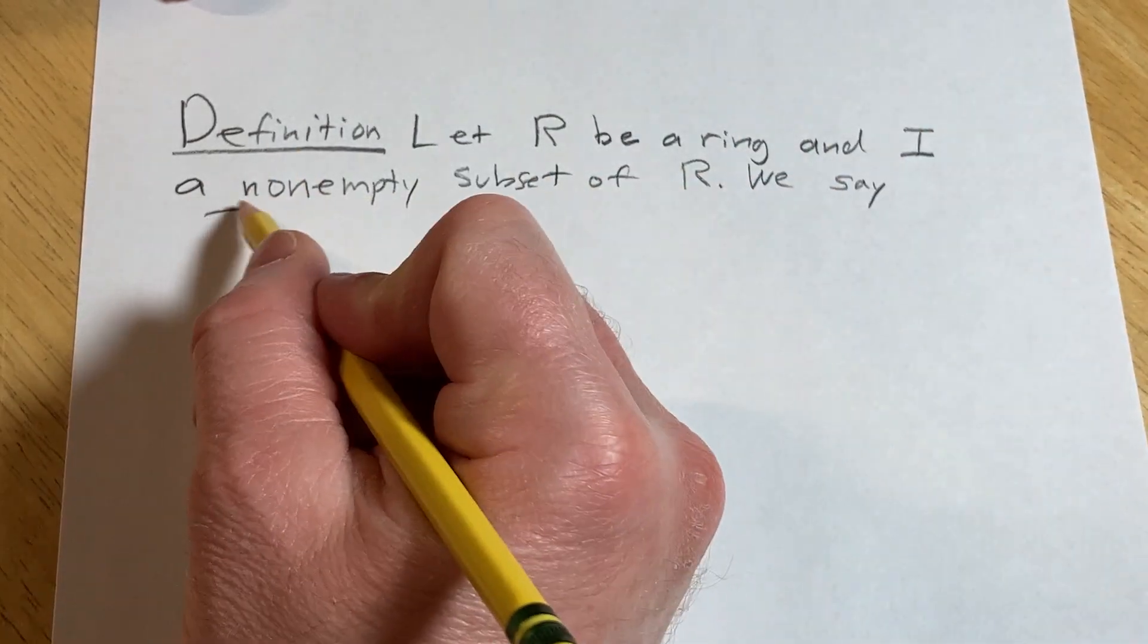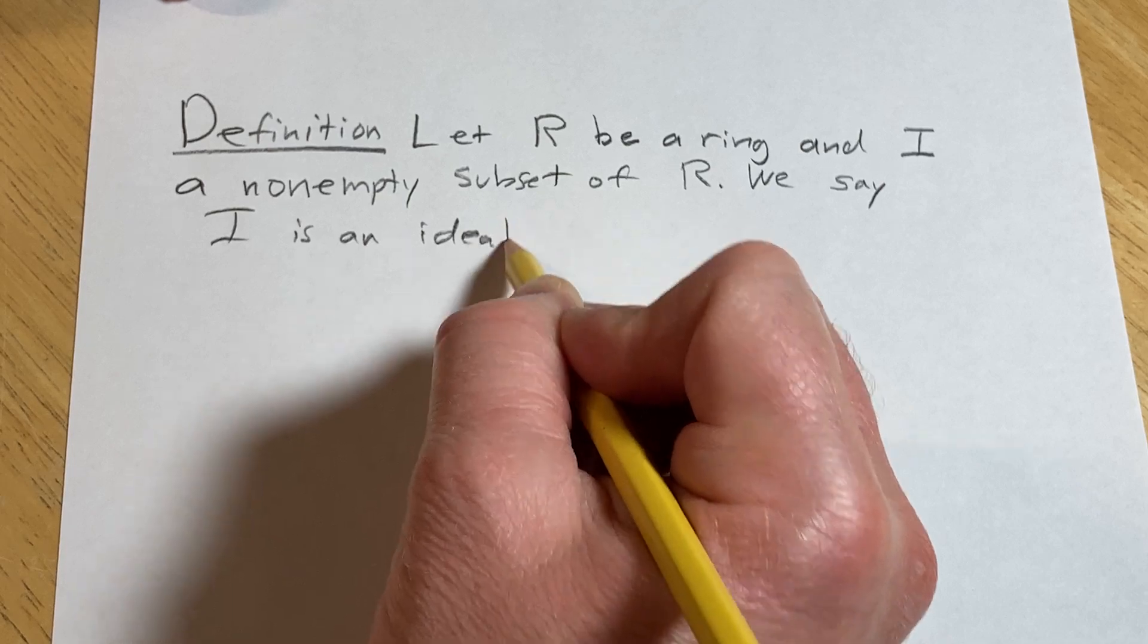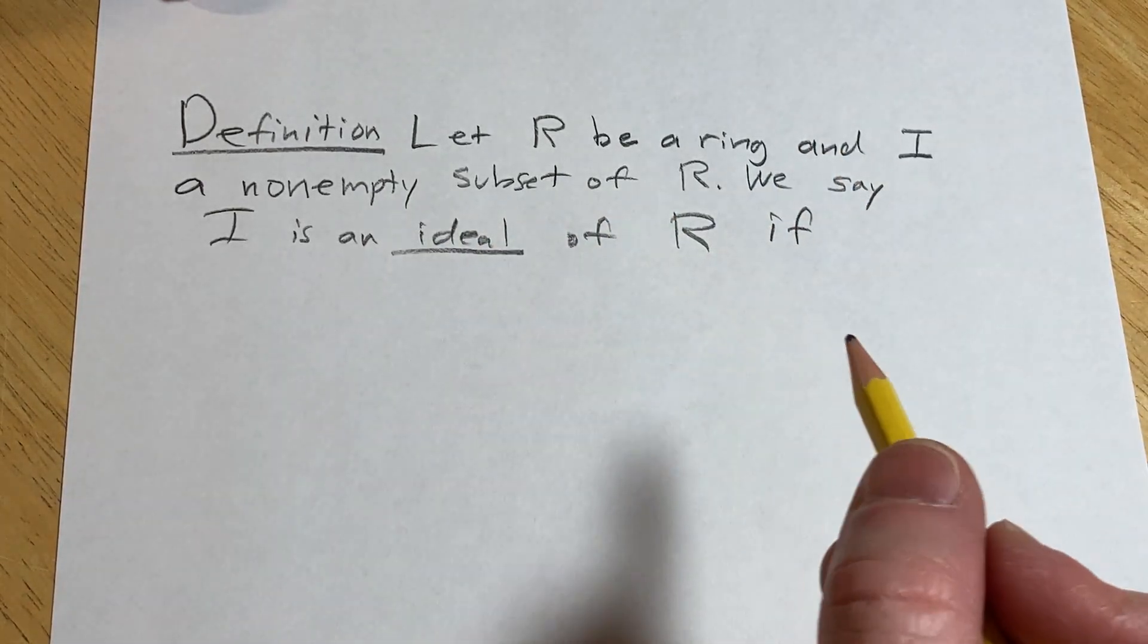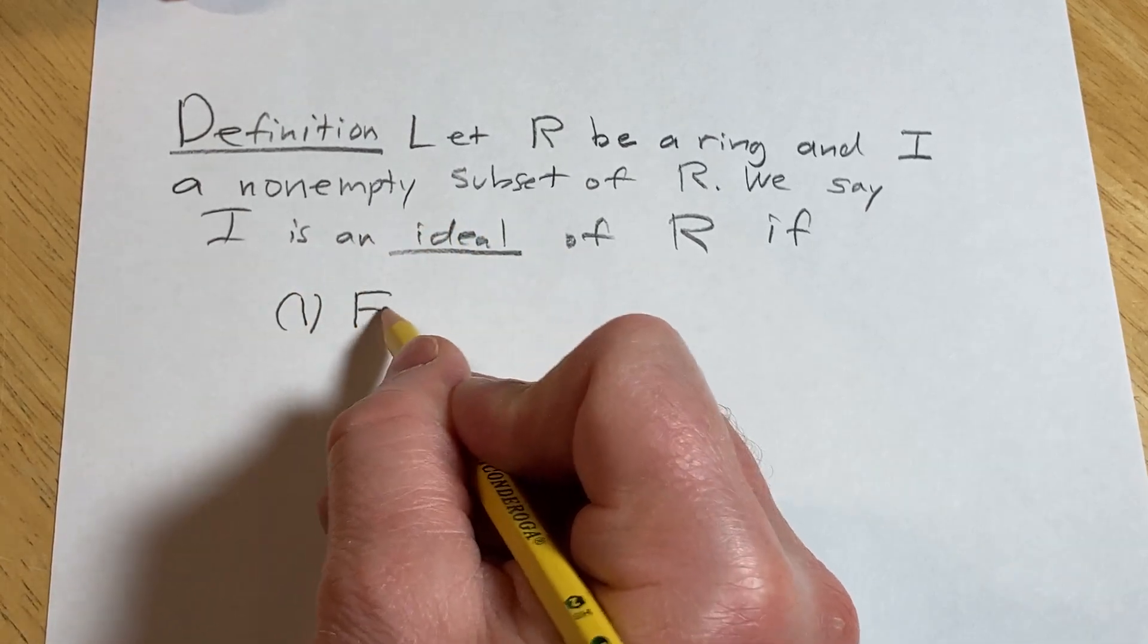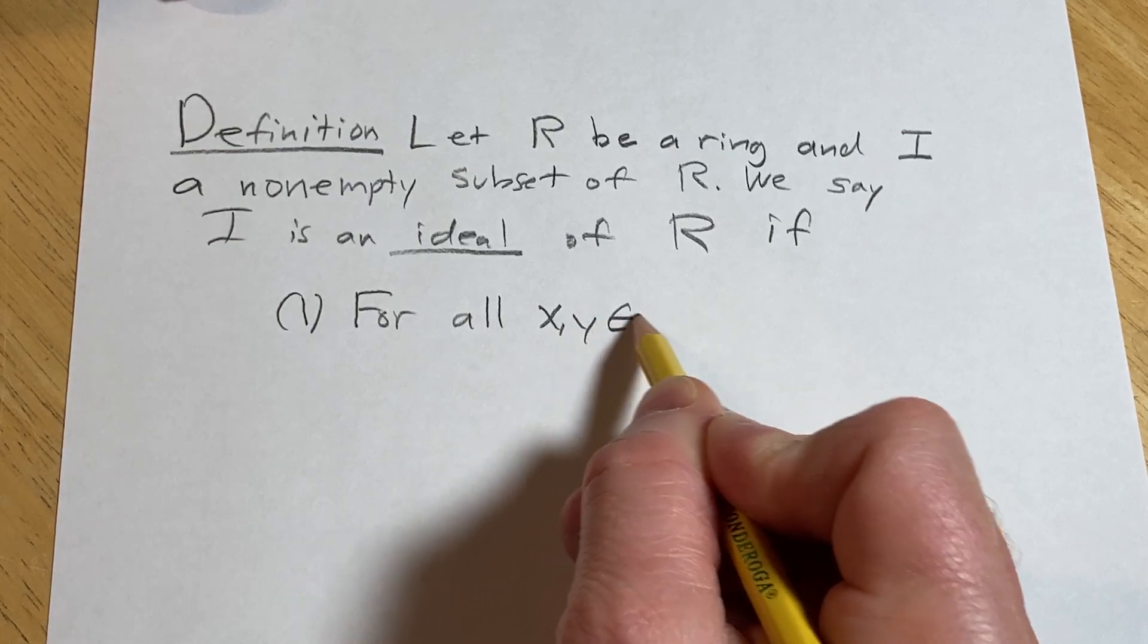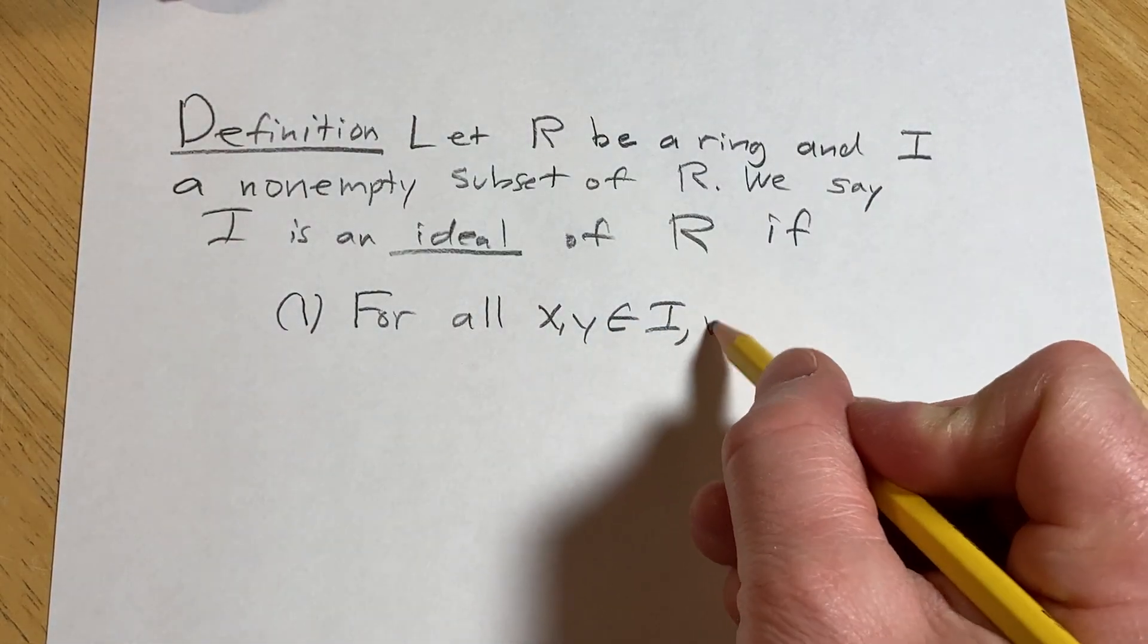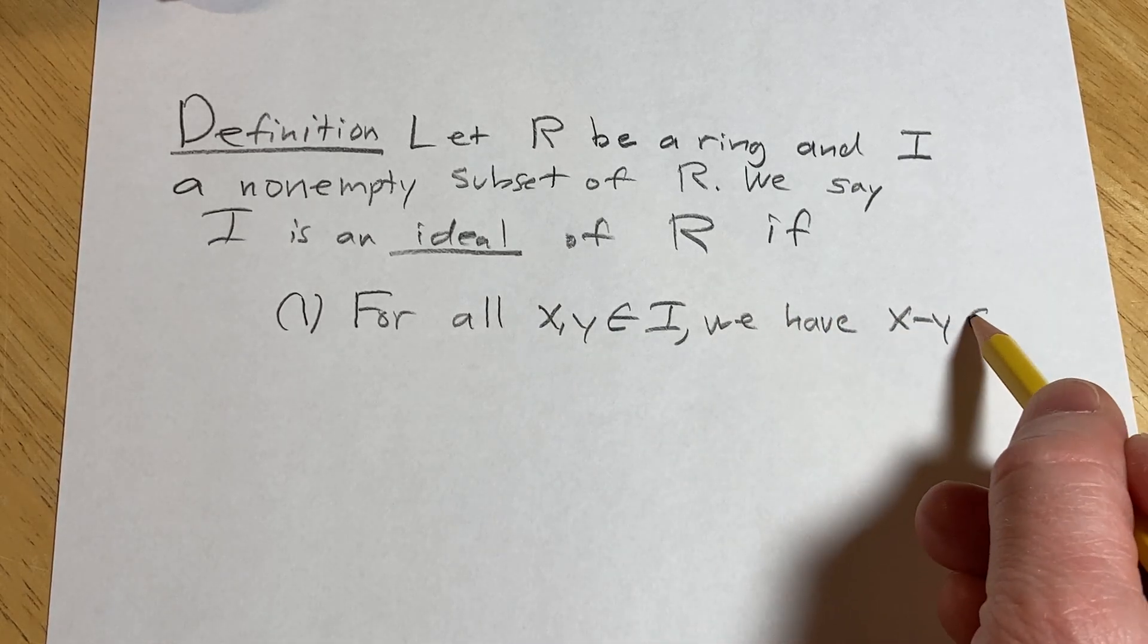We say I is an ideal of R if there's two conditions. The first condition is that for all x, y in I, we have that the difference is also in I. So we have x minus y also being a member of I.